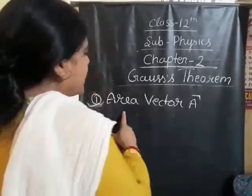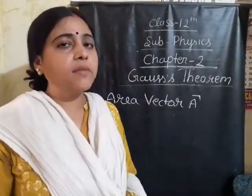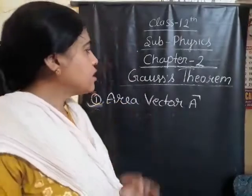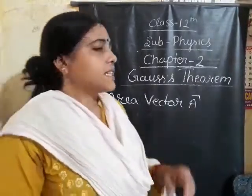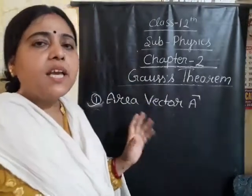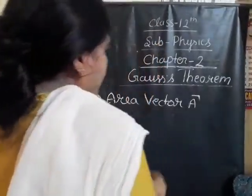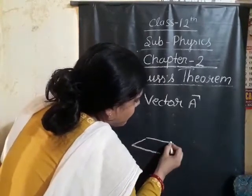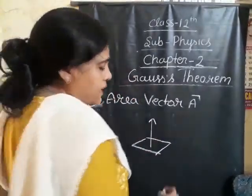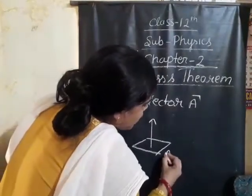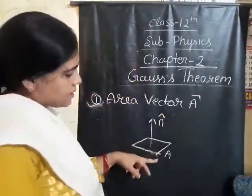Let us start with area vector. Basically, area is a scalar quantity, but in some situations in physics, it is treated as a vector. Like in Gauss's theorem and Ampere's Circuital law, we will study further where area is treated as a vector. In those cases, area has a specific direction or orientation. For a plane surface, the area vector is a vector whose magnitude is equal to the area of the surface.